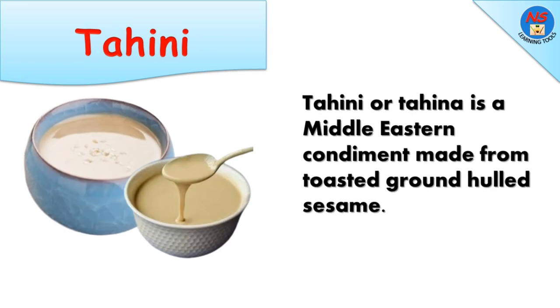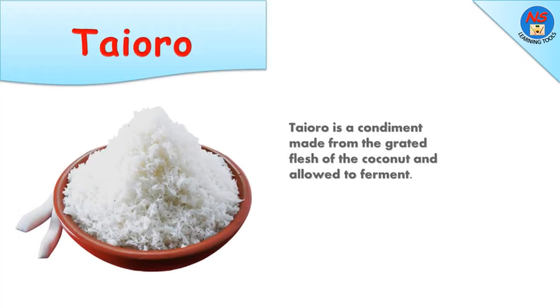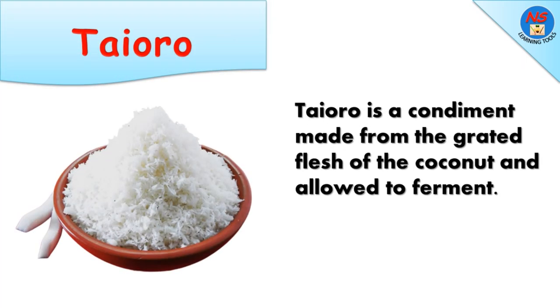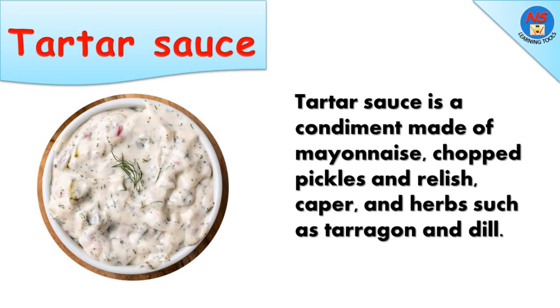Tahini, also called tahina, is a Middle Eastern condiment made from toasted ground hulled sesame. Tehoro is a condiment made from the grated flesh of coconut and allowed to ferment. Tartar sauce is a condiment made of mayonnaise, chopped pickles and relish, capers, and herbs such as tarragon and dill.